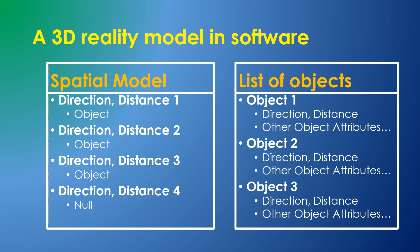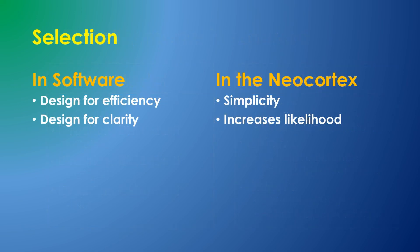Alternatively, the directions and distances might be properties of the objects themselves, and would thus be distributed throughout the knowledge base. In software design, we would make this decision based on the efficiency of execution or the clarity of the design.